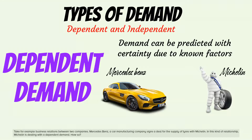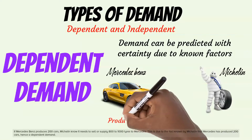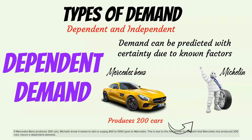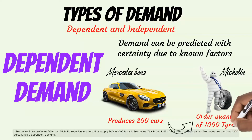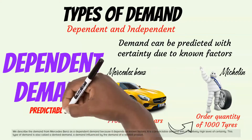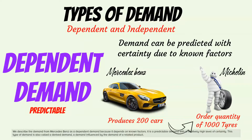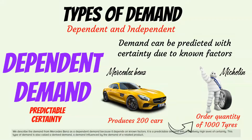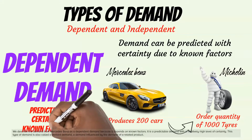How so? If Mercedes-Benz produces 200 cars, Michelin knows it needs to sell or supply 800 to 1000 tires to Mercedes. This is due to the fact known by Michelin that Mercedes has produced 200 cars, hence a dependent demand. We describe the demand from Mercedes-Benz as dependent because it depends on known factors — it is a predictable demand with a relatively high level of certainty. This type of demand is also called a derived demand, a demand influenced by the demand of a related product.